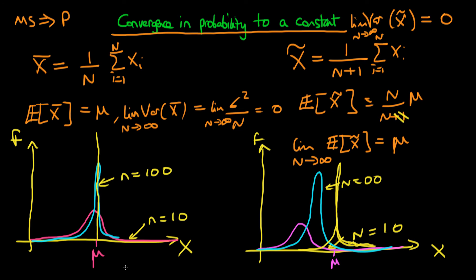So note that both of these estimators — even though x̄ is unbiased and x̃ is biased in finite samples — we have that x̄ converges in probability to μ and x̃ also converges in probability to μ. Both of these estimators are actually consistent.